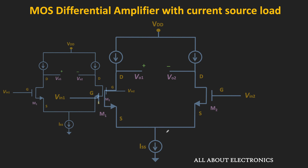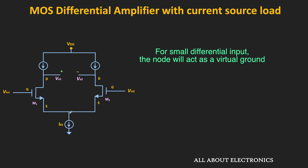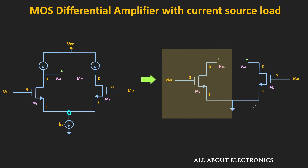For the small signal analysis, this DC voltage source will act as a zero. Moreover, all these ideal current sources will also act as an open circuit. Since both MOSFETs are identical, or in other words, since the circuit is symmetrical, this node will also act as a virtual ground. So if we see the equivalent circuit, it will look like this. Since the circuit is symmetrical and this node acts as a virtual ground, we can consider only the half portion of the differential amplifier, and using this differential half circuit, we can find the gain.